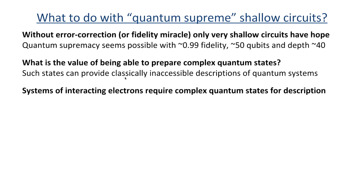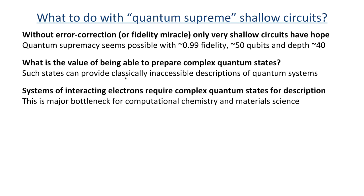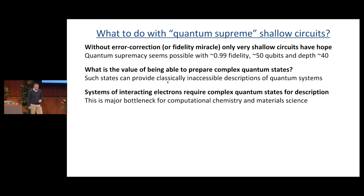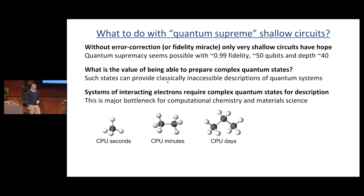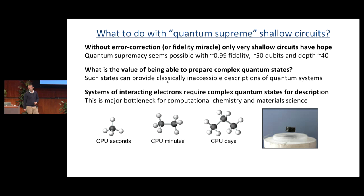Systems of interacting electrons of the sort that Garnet and Bella talked about are systems that are often very hard to model classically. Describing these systems is a bottleneck for computational chemistry and material science. Exactly computing something like methane might take seconds on a laptop, maybe minutes to do ethane. It's going to be quite difficult to do propane to chemical precision—it could easily take days. Going to even slightly larger systems today to high precision is essentially intractable, and simulating a superconductor at the atomic level would be extremely challenging.